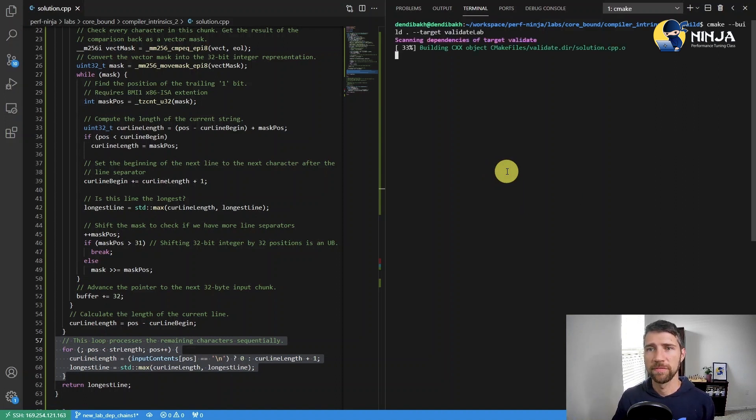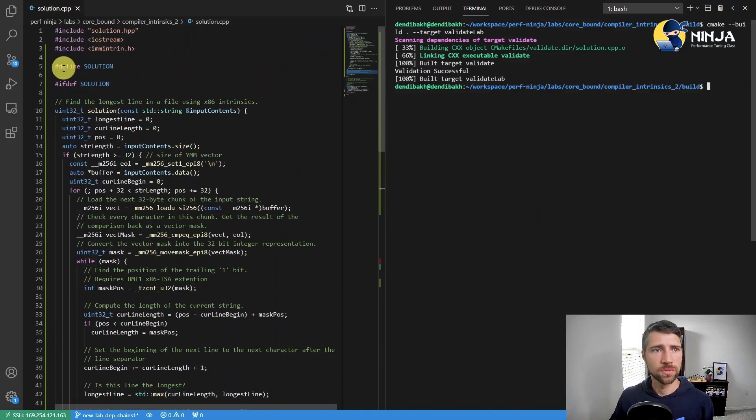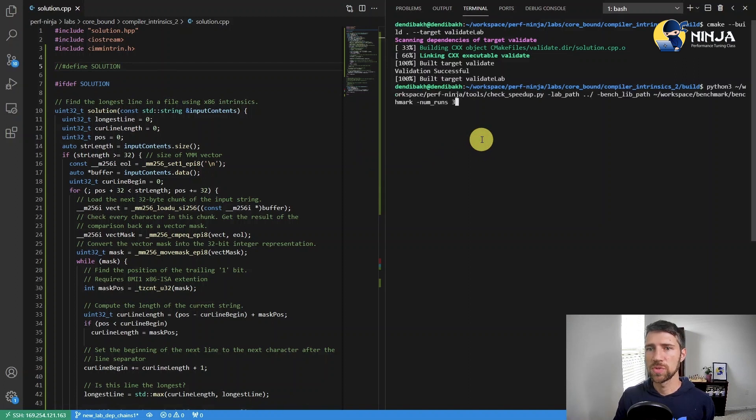Let me validate my solution. And now I'm ready to run my check underscore speedup script, which will benchmark my solution against the baseline.